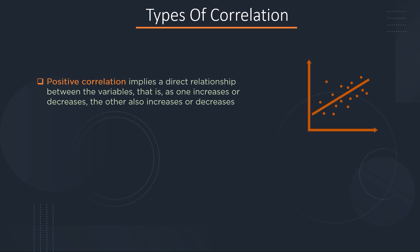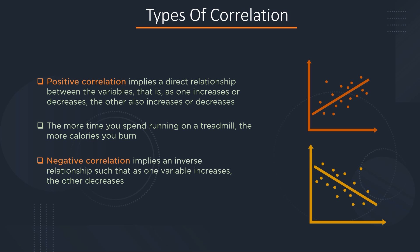A positive correlation means that the linear relationship is positive, and the two variables increase or decrease in the same direction, as you can see from the graph. For example, the calories you burn are directly proportional to the amount of time you run on a treadmill. A negative correlation is just the opposite — the relationship line has a negative slope and the variables change in opposite directions; one variable decreases while the other increases. An example is a student who has many absences will see a decrease in grades.